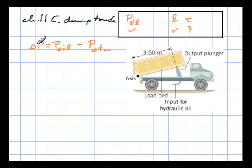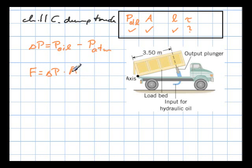With the pressure given, we can calculate the force if we know the area. They give us the radius of the plunger, and with the radius we can figure out the cross-sectional area. So the force equals delta P times the area, and of course the area is pi r squared. Because the radius is given in meters, we don't have to convert anything.